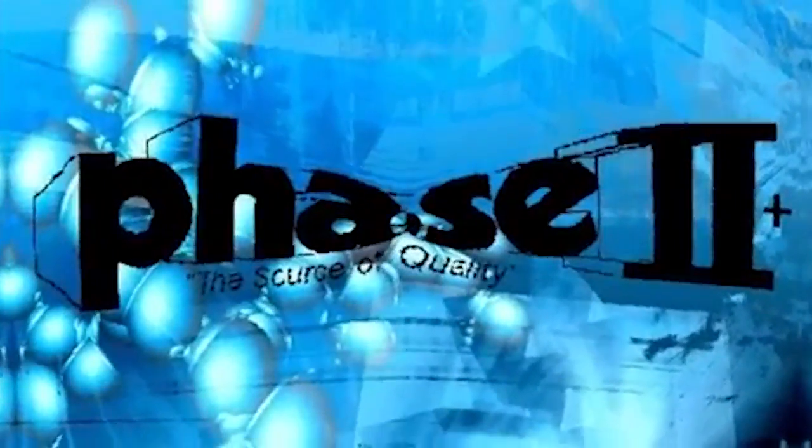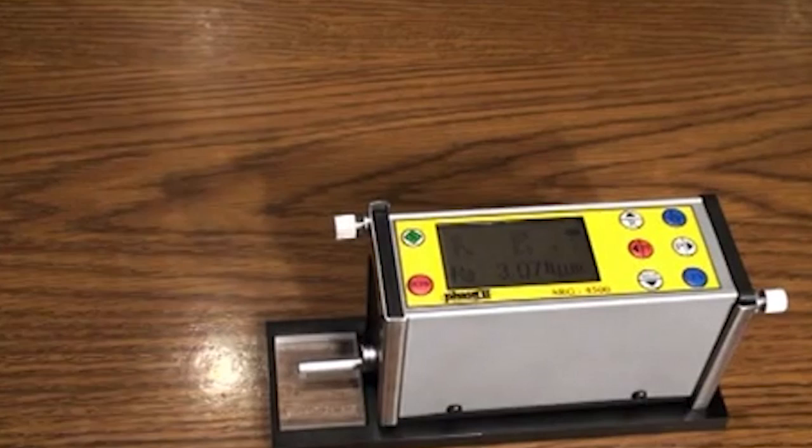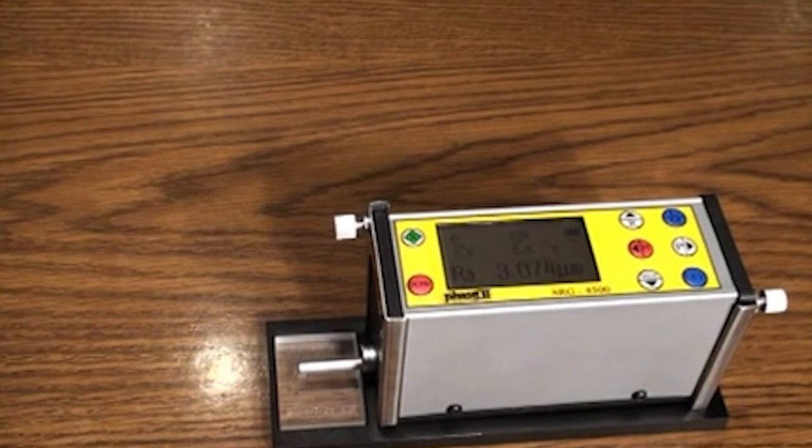This is an instructional video detailing the applications and functions of the Phase 2 SRG-4500 Surface Roughness Tester. The SRG-4500 is an instrument designed to check surface finish with measured values displayed on a digital readout in various surface roughness parameters. Note, the SRG-4500 is an extremely sensitive instrument and should be treated with care to assure measurement accuracy and reliable performance.